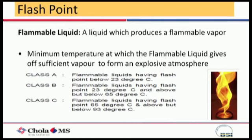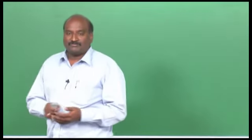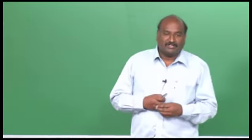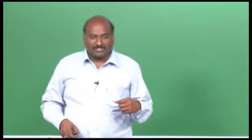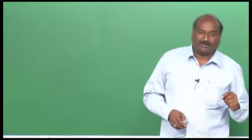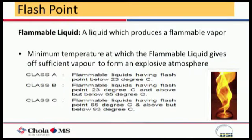Flash point and flammable liquid: a flammable liquid is a liquid which can produce flammable vapours. For example, kerosene or petrol at room temperature — you can feel the vapours or smell them. Class A products have a flash point at 23 degrees, meaning at room temperature they will start giving out vapours. Class B is in the range of 23 to 65 degrees, and Class C is beyond 65 to 93 degrees. This is what is called flammable liquid and flash point.